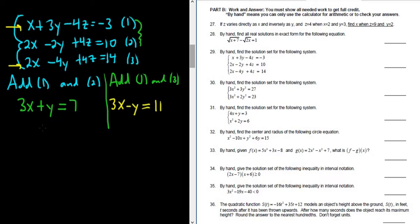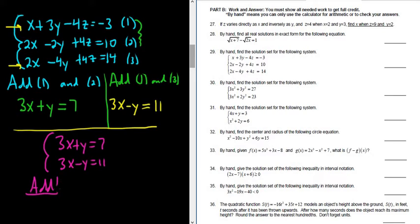Now we have two equations with two variables: 3x plus y equals 7 and 3x minus y equals 11. The goal when you have a system of equations like this is you get rid of a variable. Now we can just add these equations and things work out wonderfully. 3x plus 3x is 6x, y plus negative y is 0, and 7 plus 11 is 18. So 6x equals 18, which gives us x equals 3.